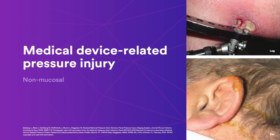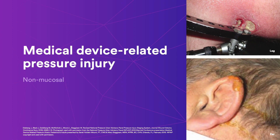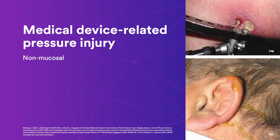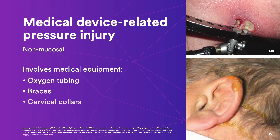A picture on the slide shows a whitish wound underneath a metal brace. A picture below shows a red and blistering wound on the top of an ear. MDRPIs that are non-mucosal can be caused by essential medical devices such as oxygen tubing, braces, cervical collars, and stabilizers. Here, you can see an unstageable pressure injury caused by a brace, and a stage 2 pressure injury of the ear caused by an oxygen cannula.